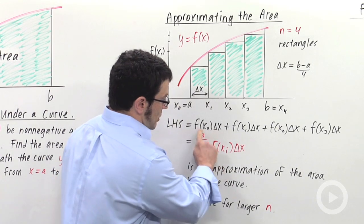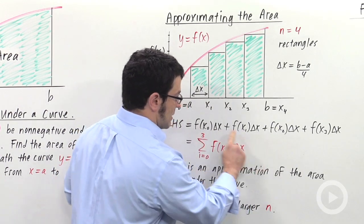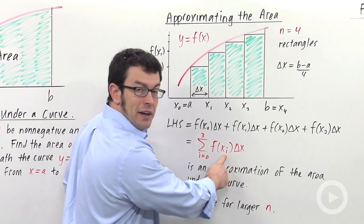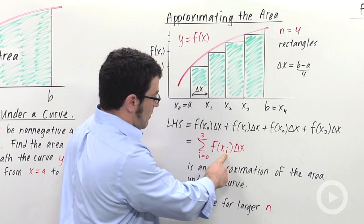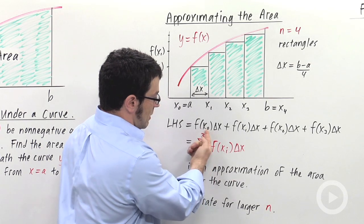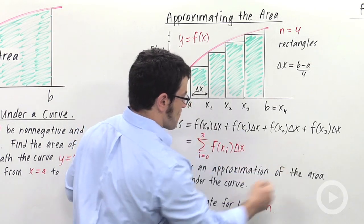But notice, every term in this sum has the form f(xᵢ) times delta x. This something is the index of the sum, and we're going from 0 to 3. Right? That represents these numbers here.